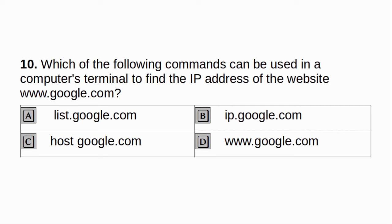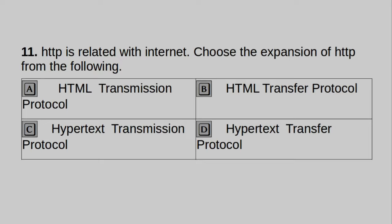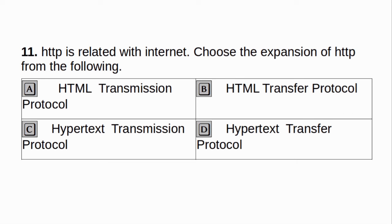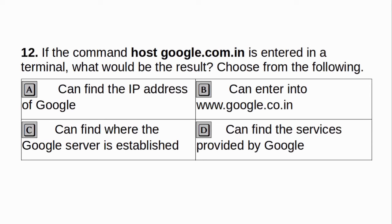Which of the following commands can be used in a computer's terminal to find the IP address of the website www.google.com? A. List.google.com. B. IP.google.com. C. Host.google.com. D. www.google.com. Answer: C. Host.google.com. HTTP is related with Internet. Choose the expansion of HTTP: A. HTML transmission protocol. B. HTML transfer protocol. C. Hyper Text Transmission Protocol. D. Hyper Text Transfer Protocol. Answer: D. Hyper Text Transfer Protocol.